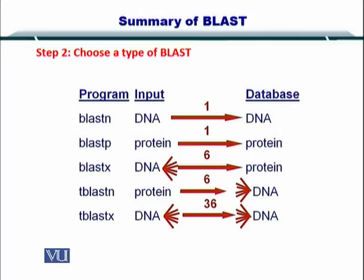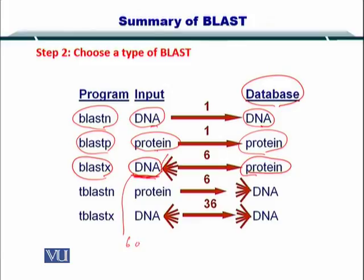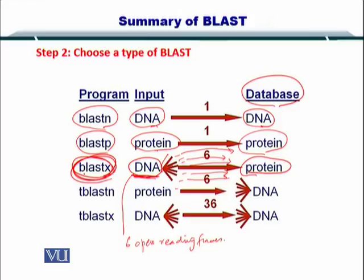To help you understand the importance of ORF: BLASTN has a DNA sequence on both sides; BLASTP has a protein sequence on both sides; but BLASTX has a DNA sequence on the query side and a protein sequence on the database side. Since a DNA sequence can have six open reading frames, you need to create six different comparisons with the protein database. In this way, one BLASTX has a computational cost of six BLASTNs or BLASTPSs.